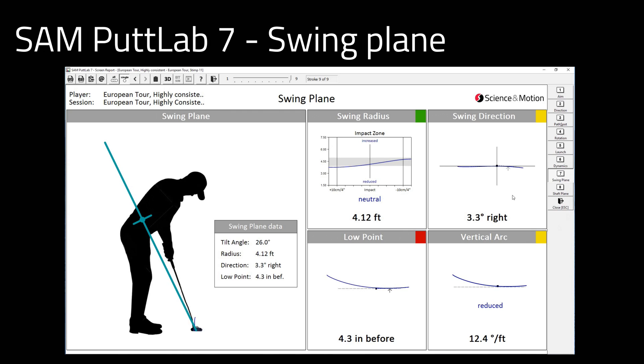The swing plane direction at the low point, which corresponds to the center of your swing plane, is 3.3 degrees to the right. This is different from the path direction at impact. If the path is curved to the inside and the low point is before impact, then normally the path will be slightly more left compared to the swing direction.